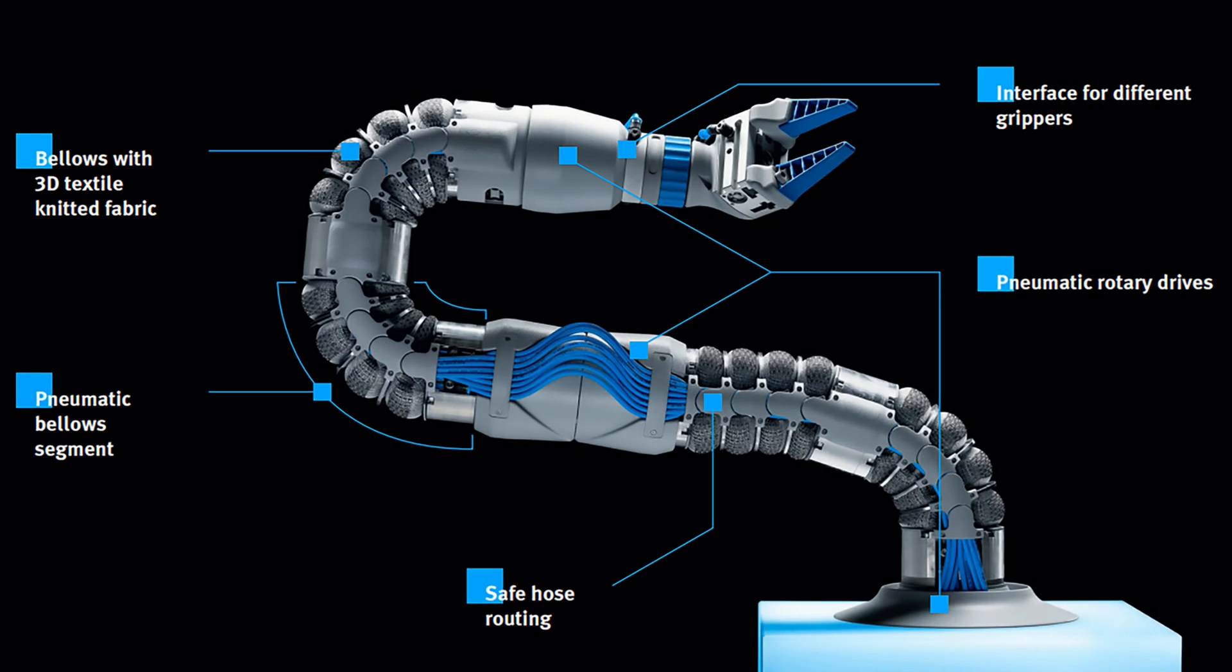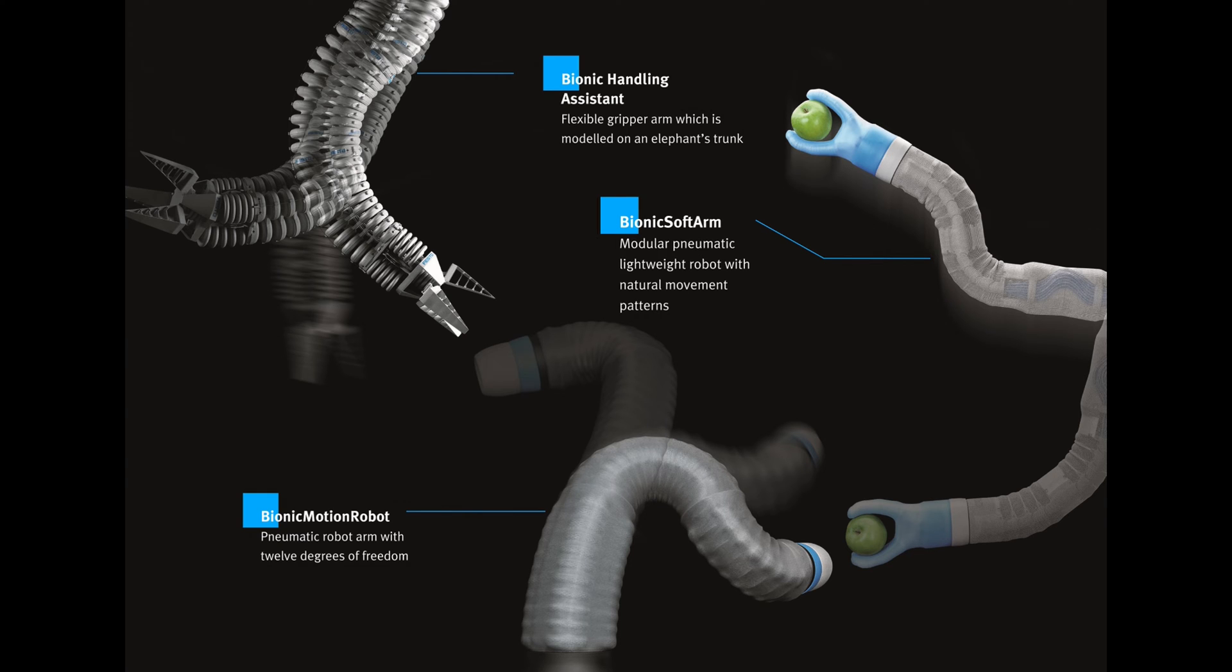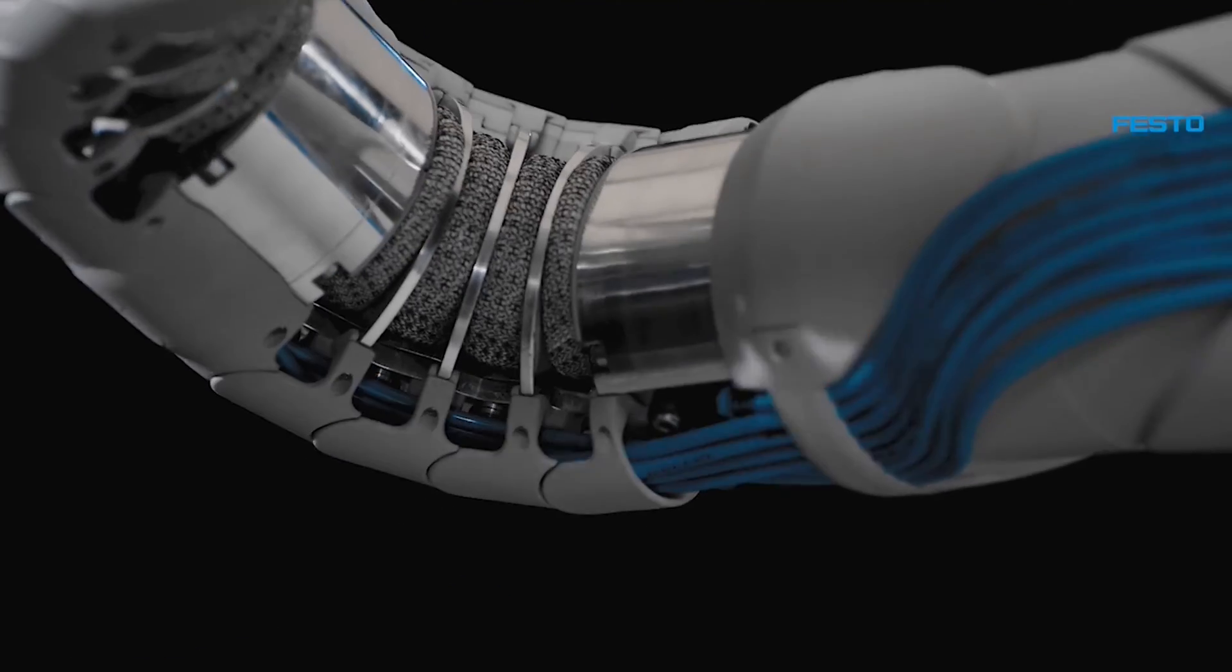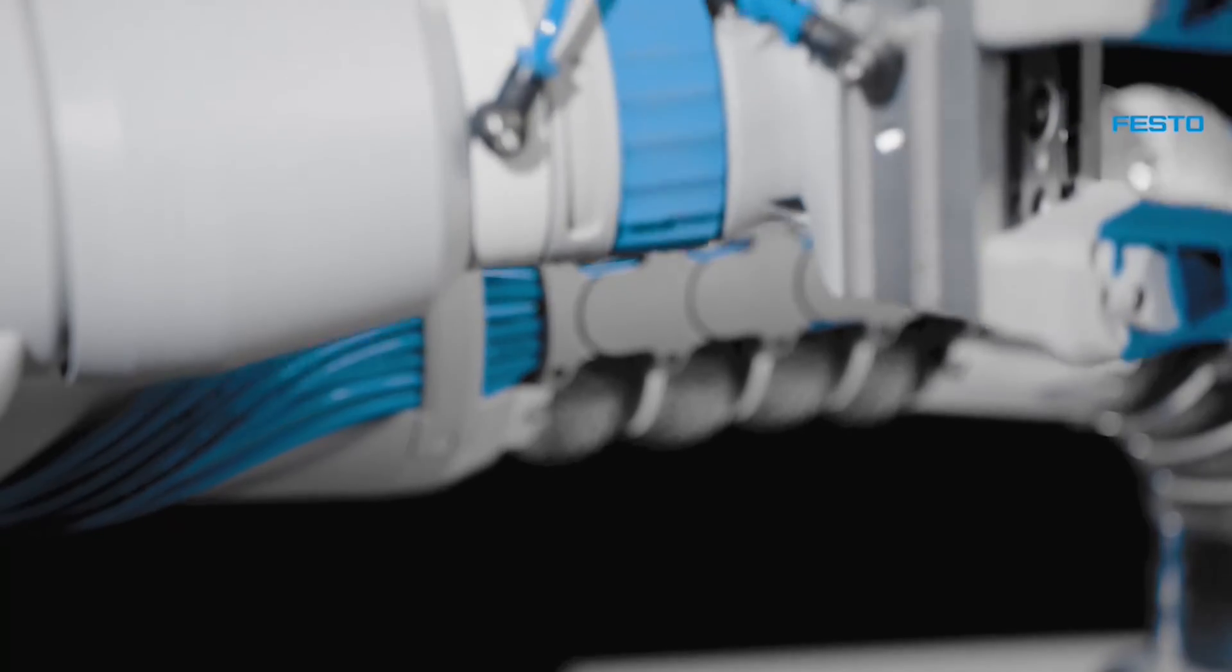Pneumatic Lightweight Robot with Natural Movement Patterns. Like its two predecessors, the Bionic Handling Assistant, 2010, and the Bionic Motion Robot, 2017, the Bionic Soft Arm is a compact further development of the Bionic Motion Robot. This is made possible by the modular design of the Bionic Soft Arm, which can be combined from several pneumatic bellows segments and rotary drives.